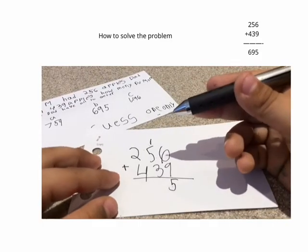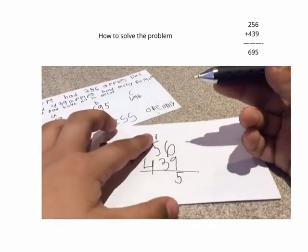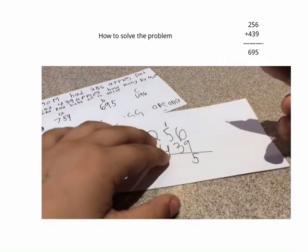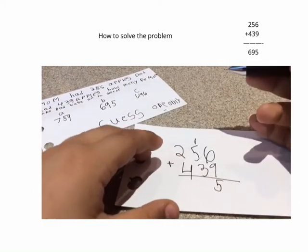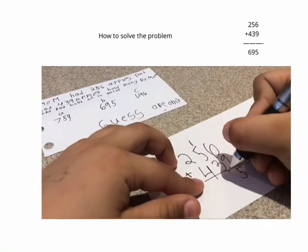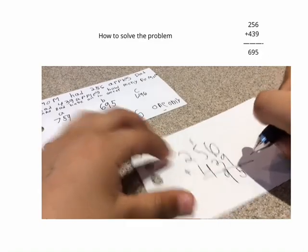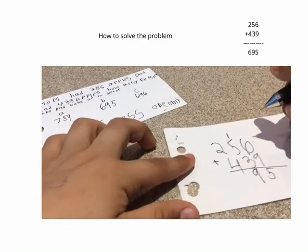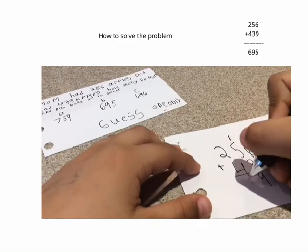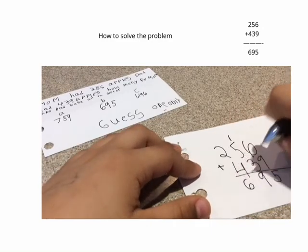And then you add the 1 to the 5 and the 3. So what's 1, 5, 3? Correct. 9. Put the 9 here. And then 2 and 4. That's 6. Easy. 6.